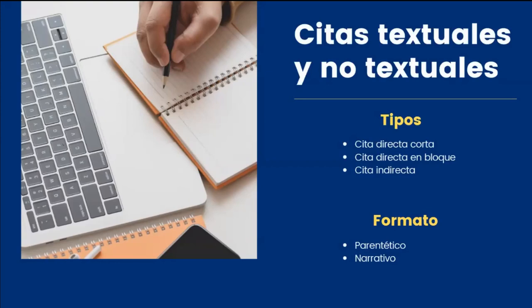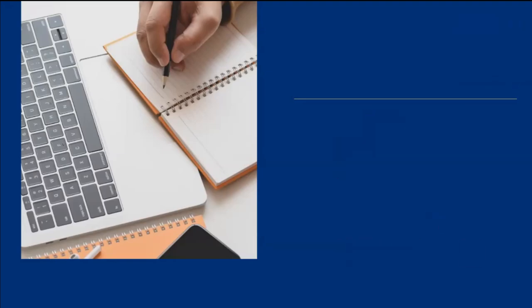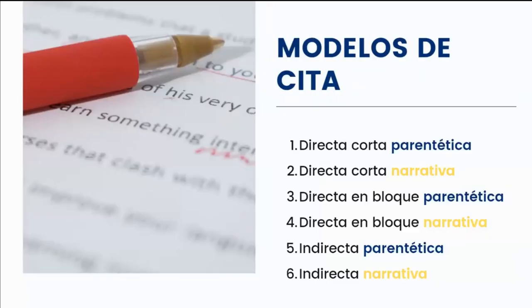¿Qué se redacta dentro de mi trabajo? Los tres elementos principales son el responsable, la fecha y la fuente. Al combinarse los tres tipos de cita con los dos formatos, tenemos seis opciones para utilizarlas en nuestro documento: cita directa corta parentética o narrativa, cita en bloque parentética o narrativa, y cita indirecta parentética o narrativa.